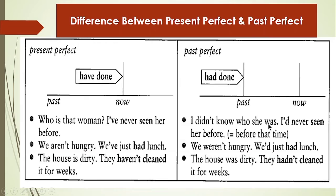For example: 'I did not know who she was — I had never seen her before that time when I saw her.' 'We were not hungry — we had just had lunch.' I'm talking about the past, like yesterday. Before that time we had already taken lunch. 'The house was dirty — they had not cleaned it for weeks.' I saw it in the past and it was dirty; they had not cleaned it before. Currently it may be clean, but when I saw it, it was not cleaned.